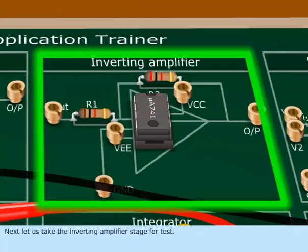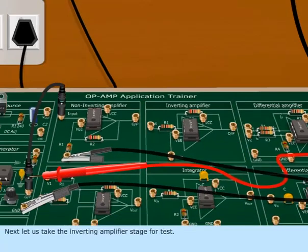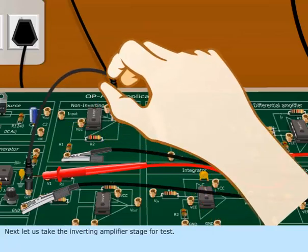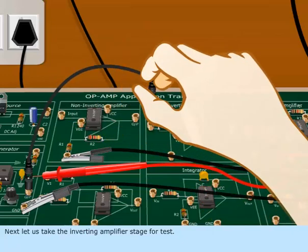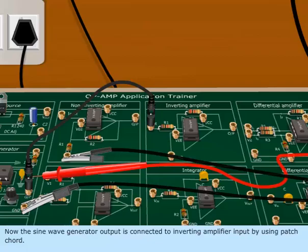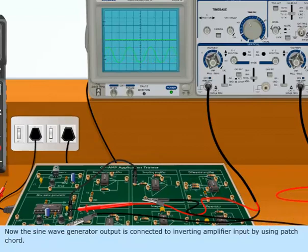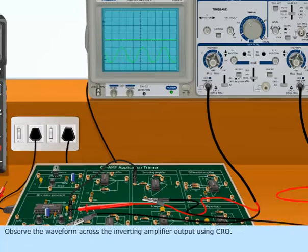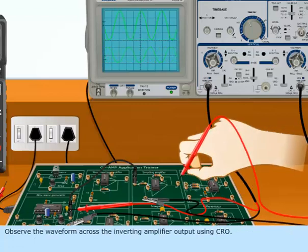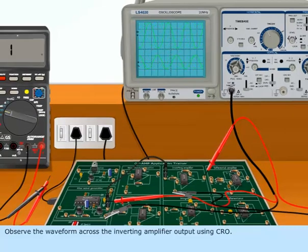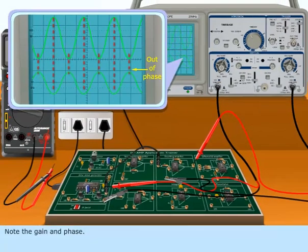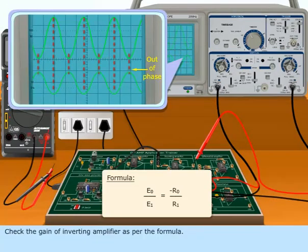Next, let us take the Inverting Amplifier stage for test. Now the sine wave generator output is connected to the Inverting Amplifier input by using a patch cord. Observe the waveform across the Inverting Amplifier output using CRO. Note the gain and phase. Check the gain of the Inverting Amplifier as per the formula.